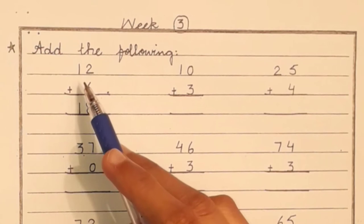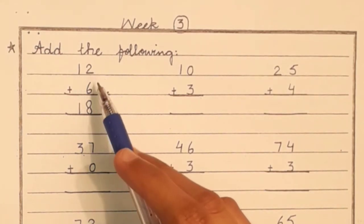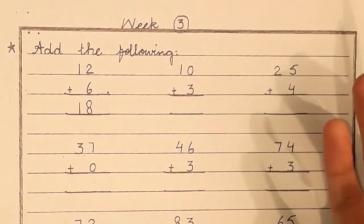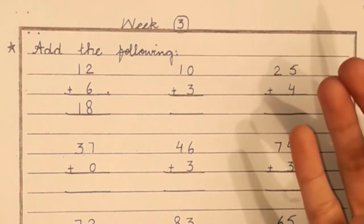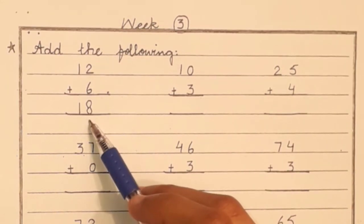In 12, you have to add six. So we will count the next six numbers. We will start with the next numbers. 13, 14, 15, 16, 17, 18. So the answer is 18.